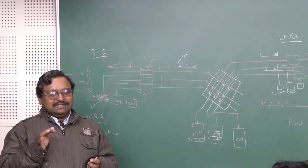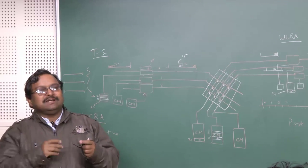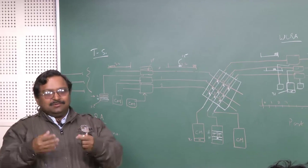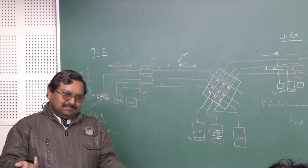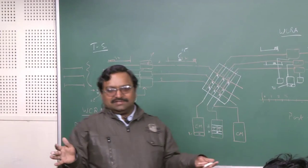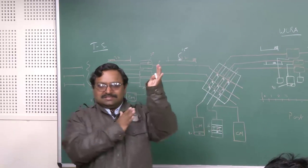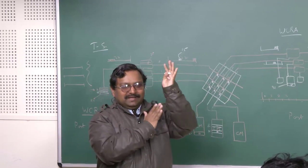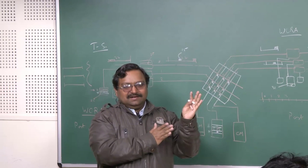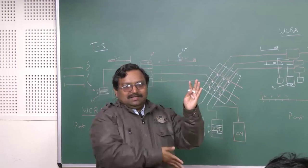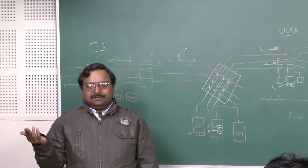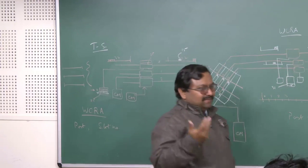In circuit switching, existing connections remain while new ones are set up, and some are released while others stay. That situation does not apply in a packet switching system. At the beginning of each slot it is fresh — all connections are made fresh depending on how packets have to be routed to the output.